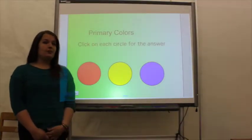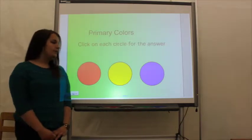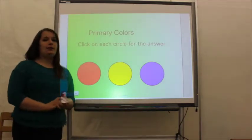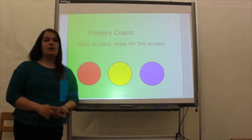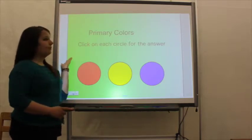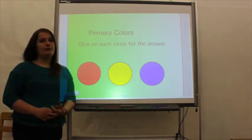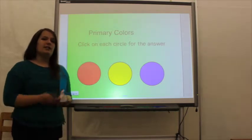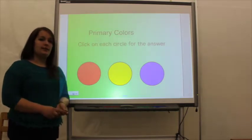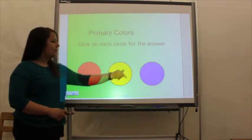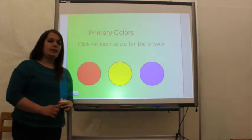First we're going to learn about the primary colors. We're going to pick up a pen, and I will invite students to come up to the board, and they're going to click on each circle for the correct answer. This is first grade, so there's also some spelling incorporated here, because they have the physical colors that they would see, and now they can see the correct spelling.